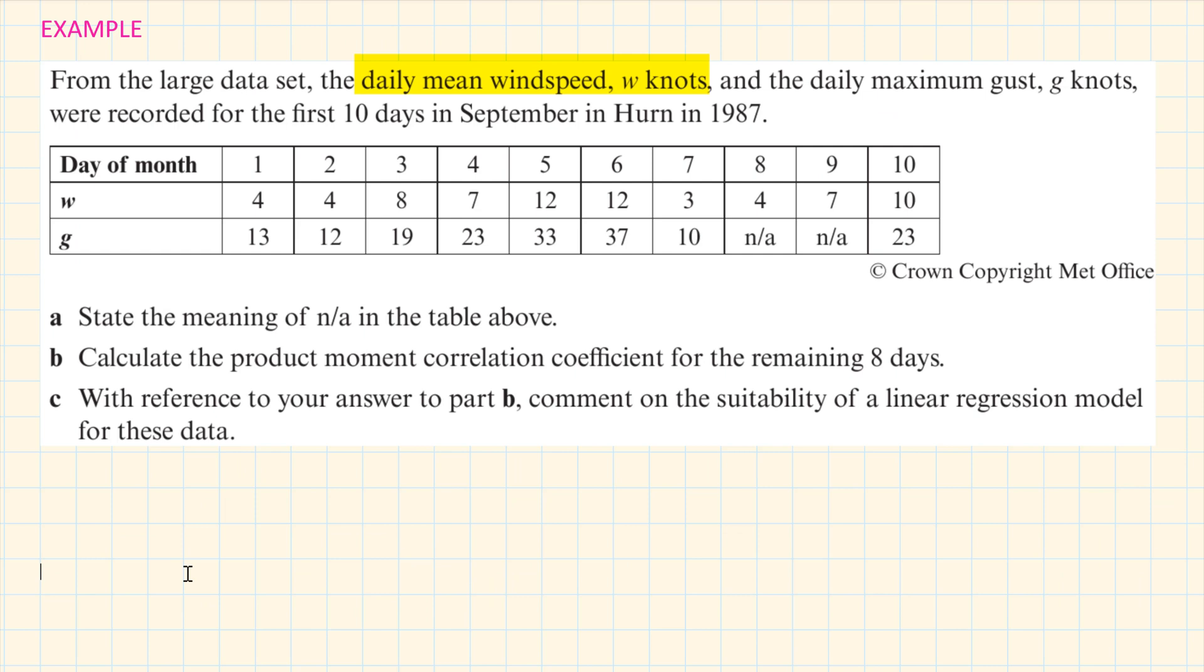From the large dataset, the daily mean wind speed w knots and the daily maximum gust g knots were recorded for the first 10 days in September in Hearn in 1987. State the meaning of NA in the table above.